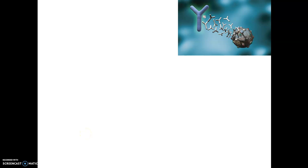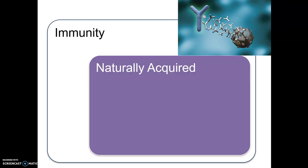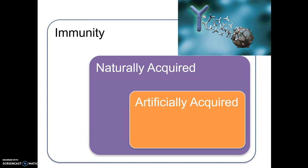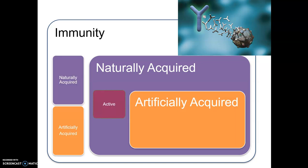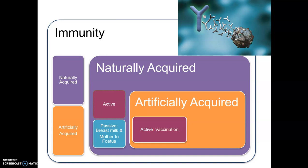In this video we're going to look at four different types of immunity, where immunity can be classified as naturally acquired or artificially acquired. It may also be classified as an active form of immunity or a passive form of immunity. Naturally acquired immunity may be active or passive, and artificially acquired immunity may also be active or passive.